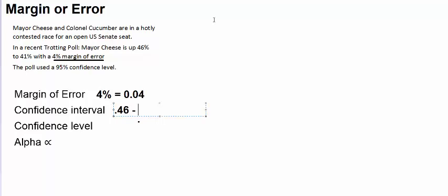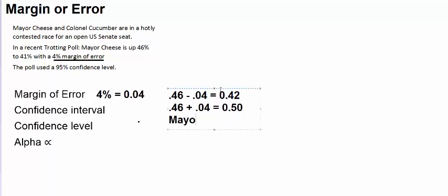You're saying, I think the population's opinion is going to be within this interval. So for Mayor McCheese, we're going to look 4% below his statistic, which would be 42%. We're going to look 4% above, which would be 50%.